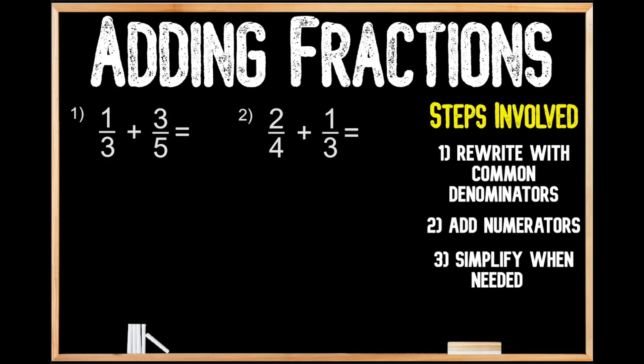In question number one we're being asked to add one third plus three fifths, but the problem is we can't solve this addition problem as currently written because we have two different denominators. As we can see on the right-hand side under our steps involved, the first step is to rewrite the fractions with common denominators. We're going to rewrite these fractions down below so that we have a bit more space to work with.